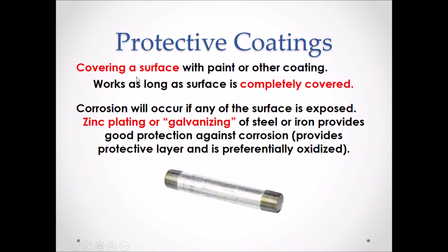Protective coatings. Covering a surface with paint or another coating will protect against corrosion. This type of protection will only work as long as the entire surface is completely covered. Corrosion will then only occur if the surface of the substance is exposed.